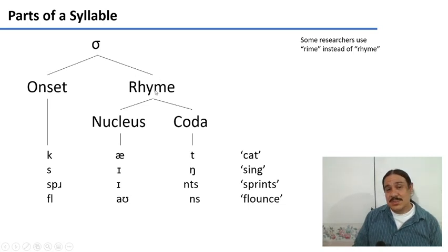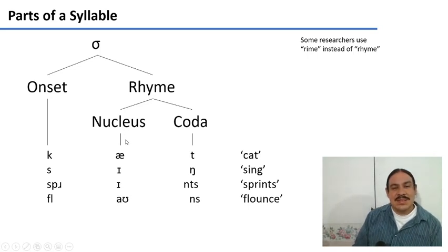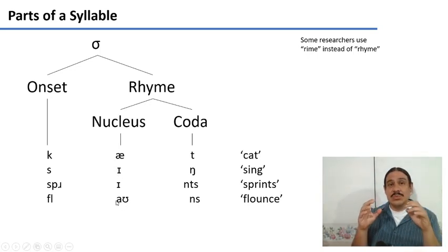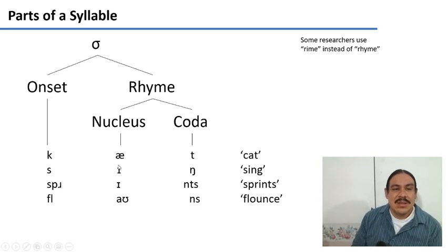So we have this part. And then the second part of the syllable is the rhyme, which is itself divided into two more subcomponents, the nucleus of the syllable and the coda of the syllable. So in these syllables, the nucleus is either the vowel or the diphthong. So in English, diphthongs are assumed to be whole phonemes. So the whole diphthong can occupy the nucleus position. So in cat, the nucleus is the vowel æ. In sing, in sprints, it's the vowel ɪ. And in flounce, it's the diphthong aʊ, which again, in English, we assume to be a single unit.